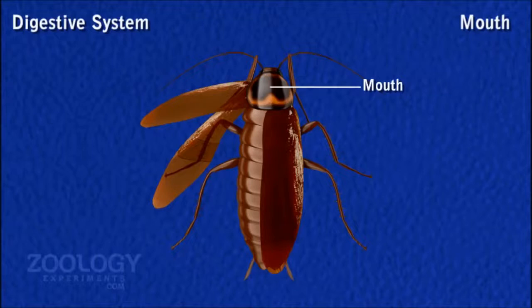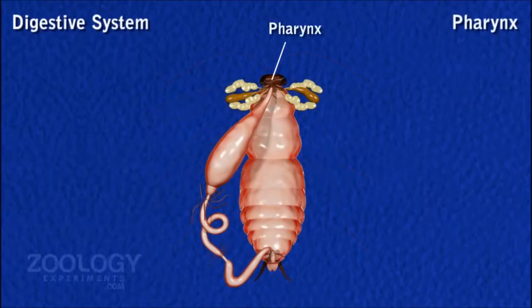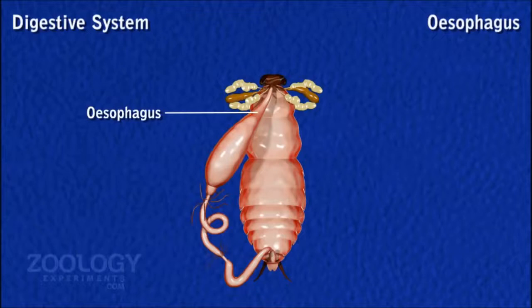Mouth is a small opening at the base of the pre-oral cavity and leads into the pharynx. Pharynx is short and tubular, and its circular lining is more folded posteriorly. Esophagus: from the pharynx arises a long, straight, narrow, and laterally compressed tube called esophagus.